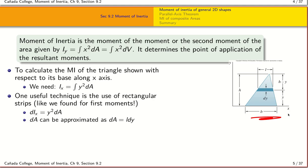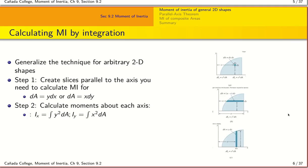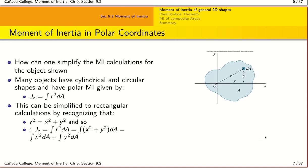We solved for the moment of inertia of a triangle about the x-axis using this approach. The general technique for solving for moment of inertia largely involves integration, and the strategy is to simplify your integral. Using either a horizontal strip or a vertical strip is the general approach to begin with. We also introduced the moment of inertia in polar coordinates.